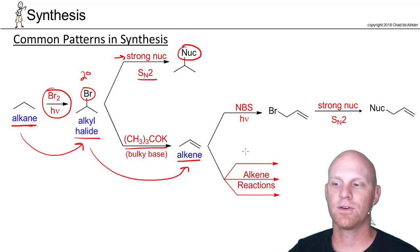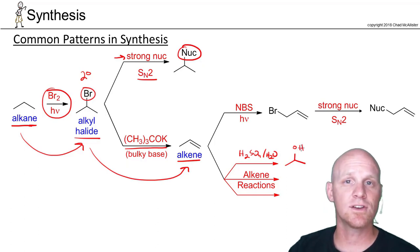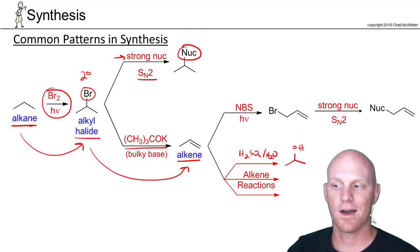All those different alkene reactions—notice like if you add H2SO4 in water, or just simply dilute H2SO4, they might write as H3O+, that turns an alkene into an alcohol. It adds an H and OH, Markovnikov fashion. You do have to worry about rearrangements, but not in this example.